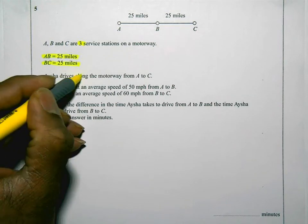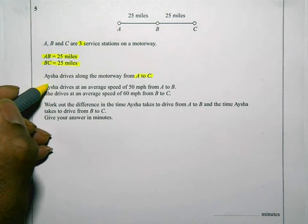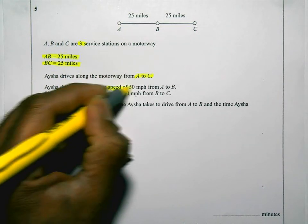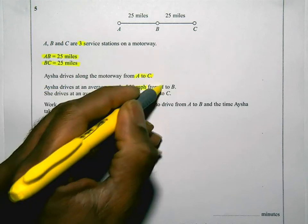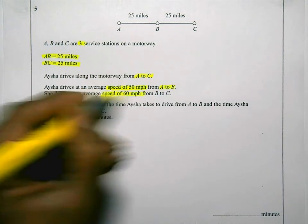Ayesha drives along the motorway from A to C. Ayesha drives at an average speed of 50 miles per hour from A to B and she drives at an average speed of 60 miles per hour from B to C.